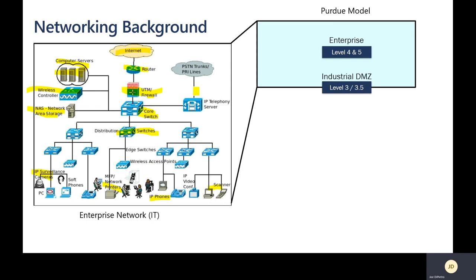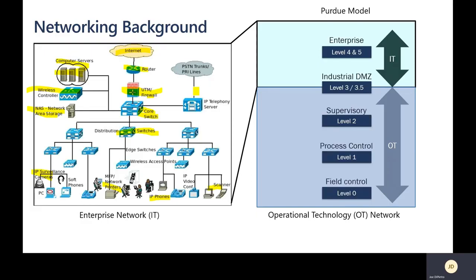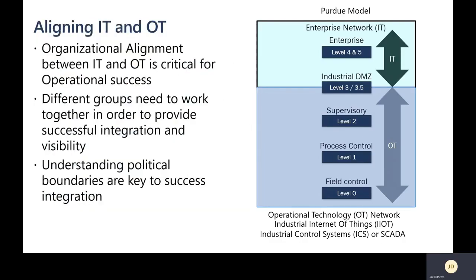The industrial DMZ, or demilitarized zone, sits at levels three and 3.5. So if you're talking to an OT person or a plant engineer and they mention a DMZ at level 3.5, this is what they're referring to. For operational technology networks, they're broken down further: the supervisory layer is at level two, process control is at level one, and field control is at level zero. Other terms you should be aware of include industrial internet of things, industrial control systems like ICS, and SCADA.